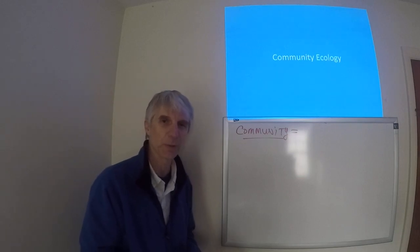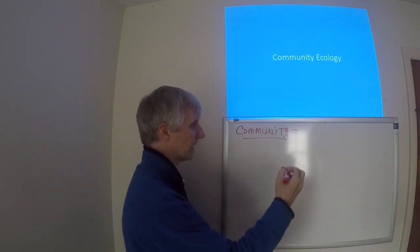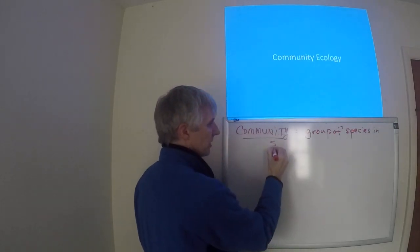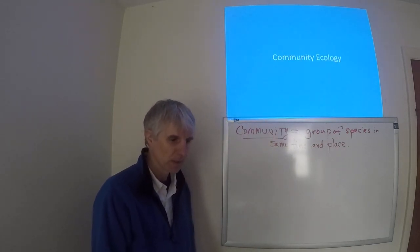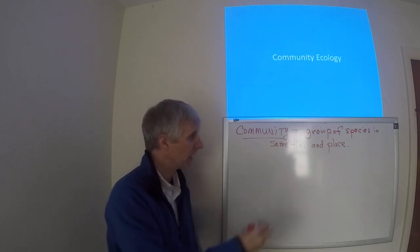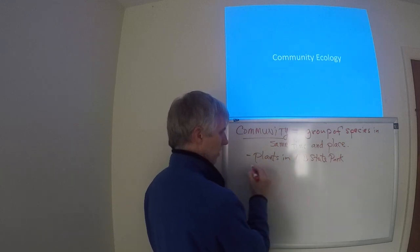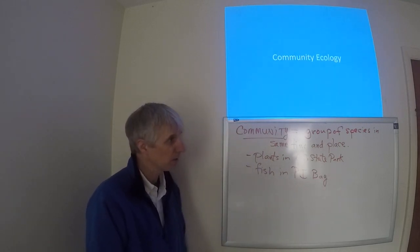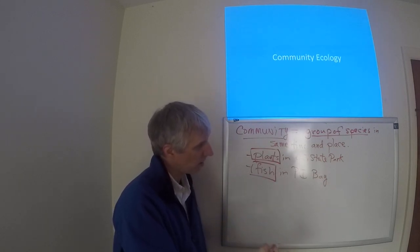The first thing we should do is define community — we did that at the beginning of the semester, but let's do it again. A community is a group of species that occur in the same time and place. So we could talk about the forest community in Erie Bluff State Park, or the community of fish in Presque Isle Bay. All of these are communities because we're talking about a group of species in the same time and place.